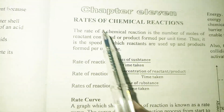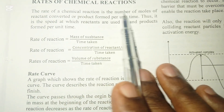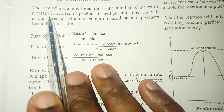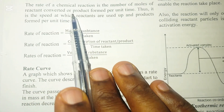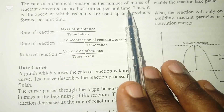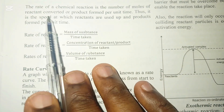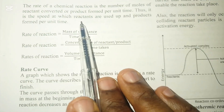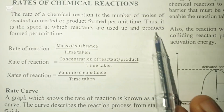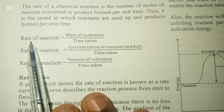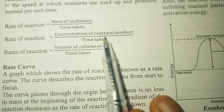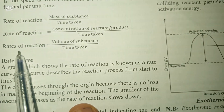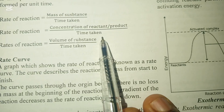Let's quickly also discuss the rate of chemical reaction. The rate of chemical reaction is the number of moles of reactants converted or product formed per unit time — it is the speed at which reactants are used up and products are formed. The formula: rate of reaction = mass of substance / time, or concentration of reactant or product / time, or volume of substance / time.